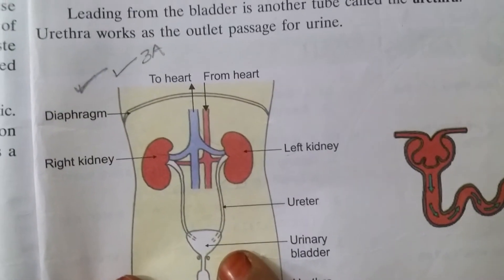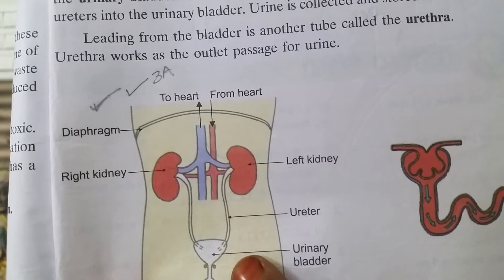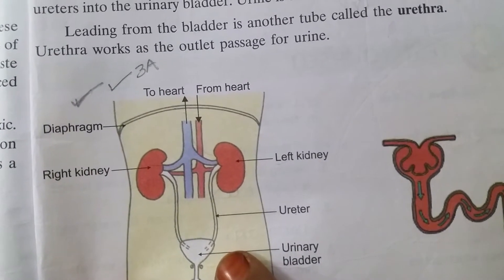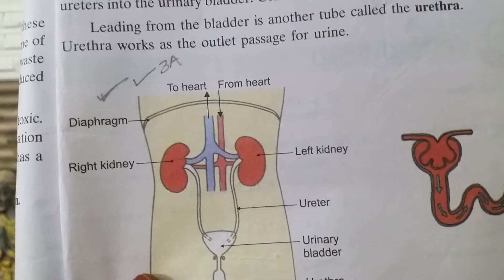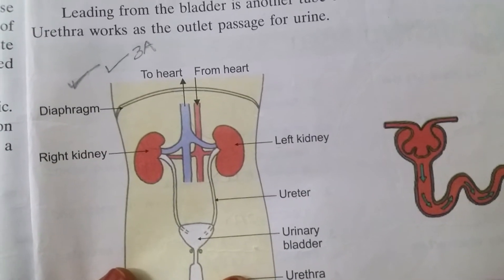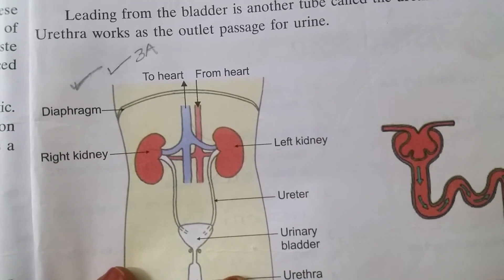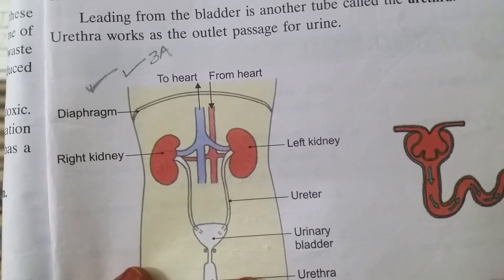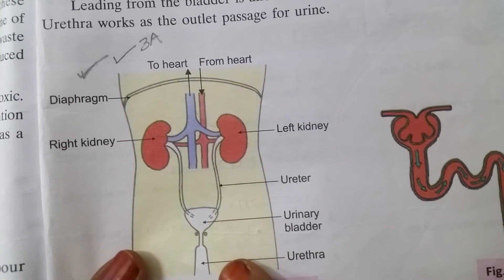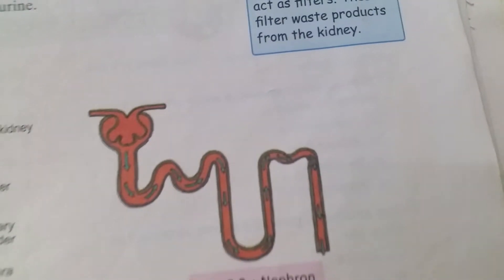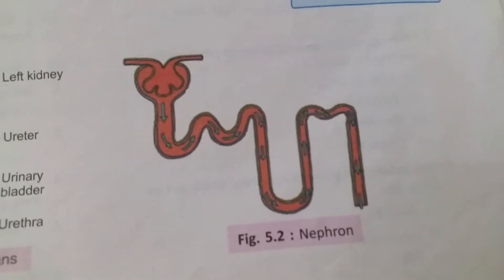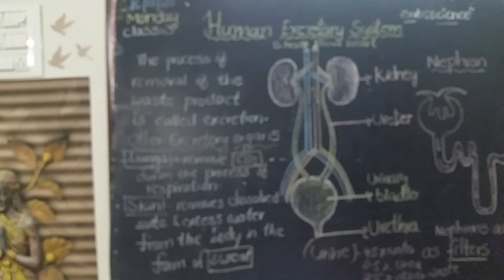Leading from the bladder is another tube called the urethra. The urethra works as the outlet passage for urine. Nephrons act as filters.